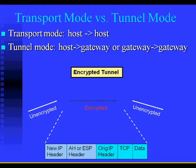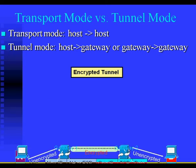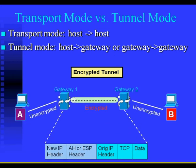After the security fields are added, the entire packet plus security fields is treated as the payload of a new outer IP packet with a new outer IP header. Tunnel mode is used when one or both ends of the security association are a security gateway. This is shown in the diagram of the firewall router implementing the IPSec architecture.